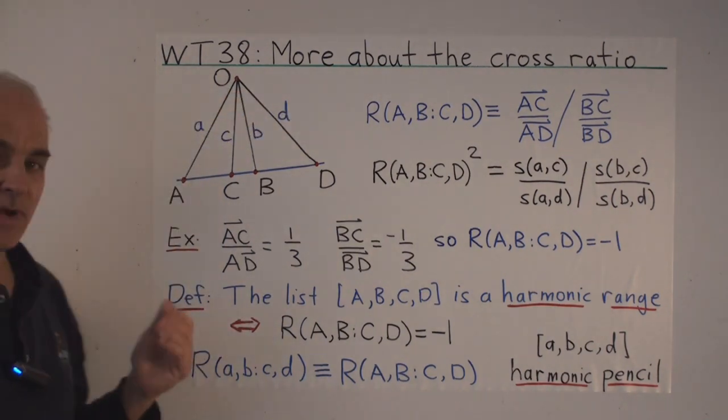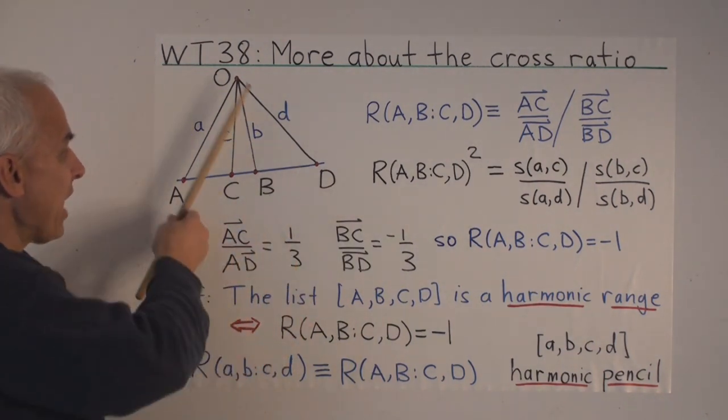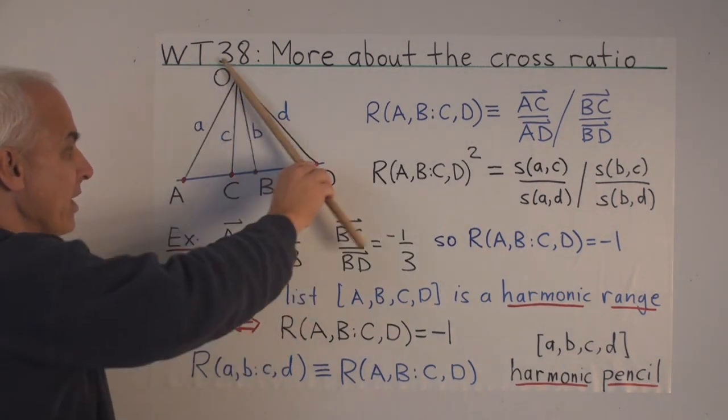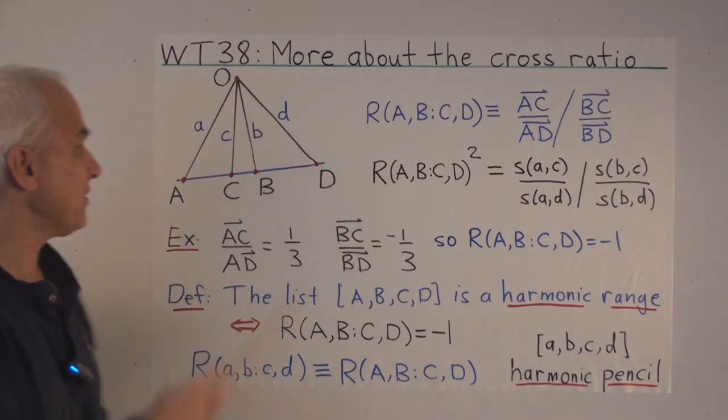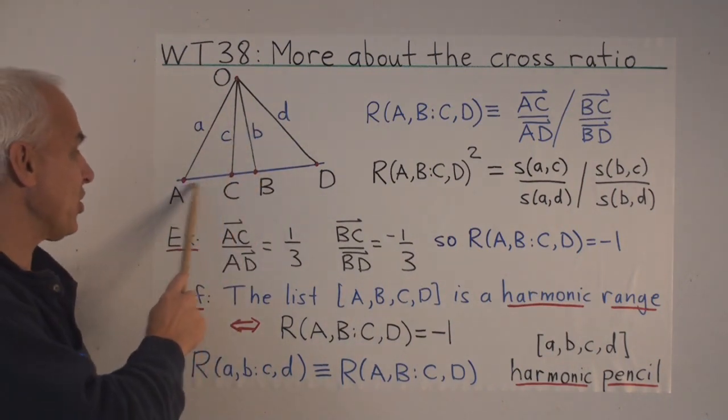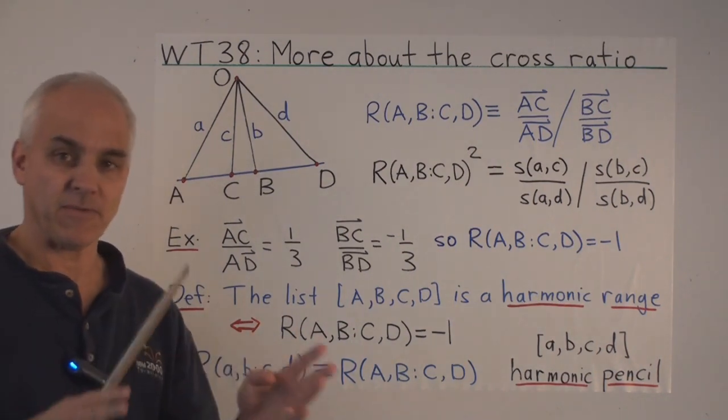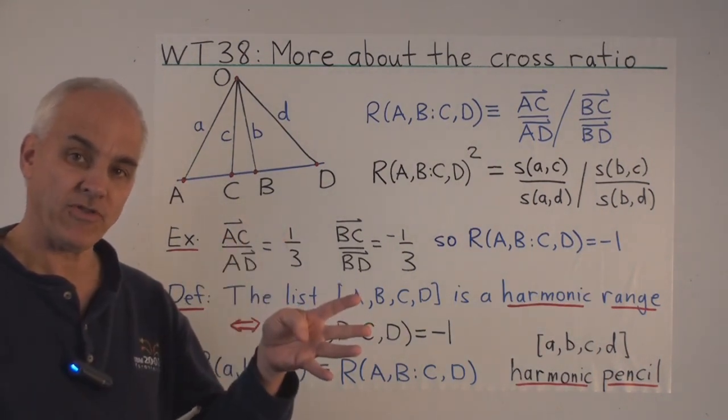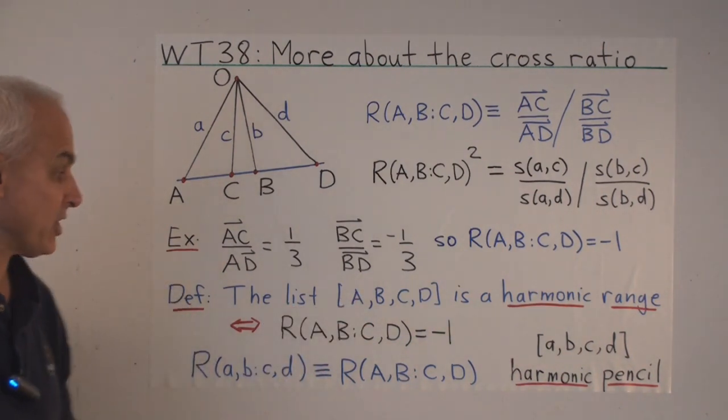So that means that the cross-ratio is not just associated to these four points, but actually associated to these four lines. And so it makes sense to talk about the cross-ratio of these four lines as being exactly the same as the cross-ratio of these four points. So we have some flexibility, you could talk about four collinear points having a cross-ratio, or four concurrent lines as having a cross-ratio.